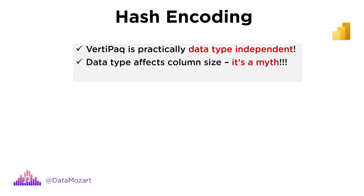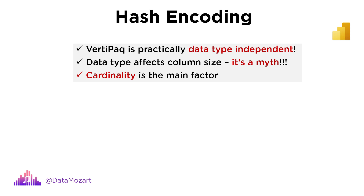It's a myth that the data type of a column affects its size within the data model. On the contrary, the number of distinct values within the column — known as cardinality — mostly influences column memory consumption.